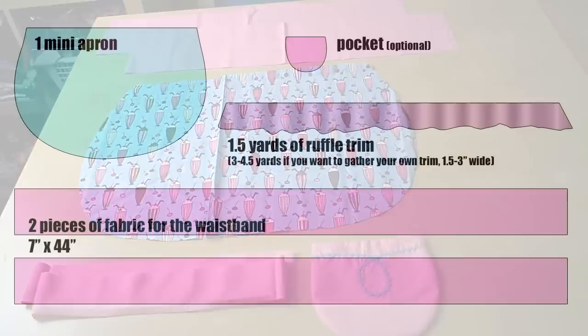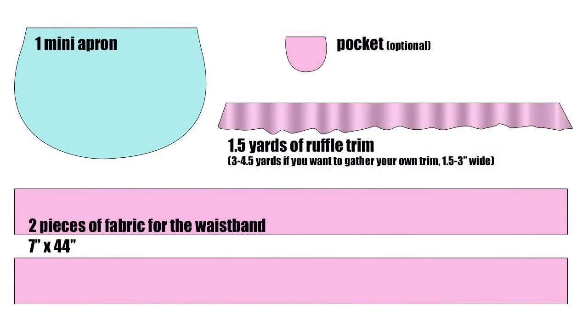So aside from the apron piece, I have a pocket, which is optional, 1.5 yards of ruffle trim. You can make your own if you want. I have some tutorials for how to make ruffle trim. Two pieces of fabric with a waistband that are 7 inches by 44 inches. And I'll just note here that this pattern works best with woven fabrics.